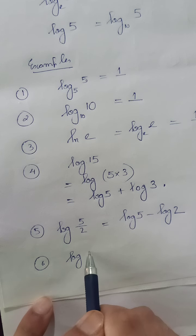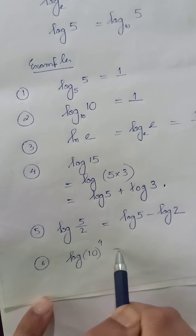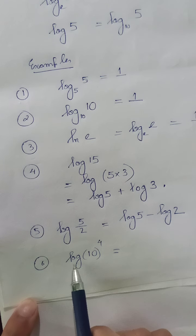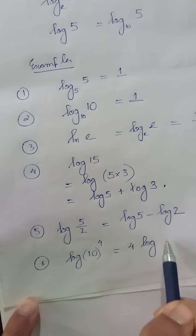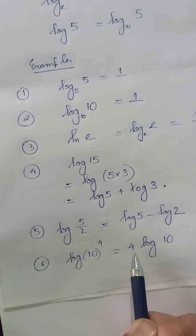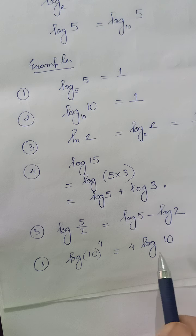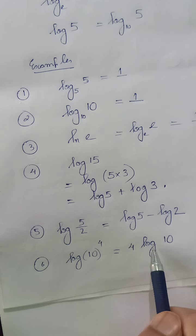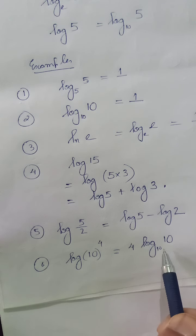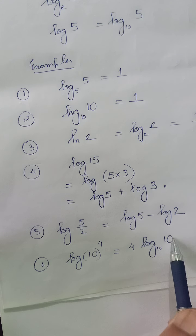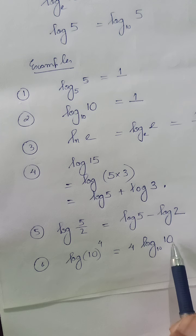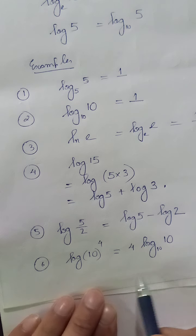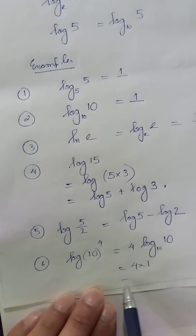Example 6: log of 10 to the power 4. We know the rule log of M to the power N can be written as N times log of M, so this is 4 times log of 10. Logarithm without any base means the base is 10, and log of 10 to the base 10 is 1, so 4 times 1 equals 4.